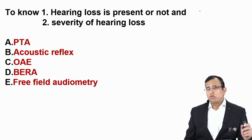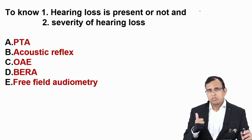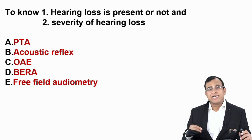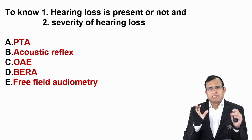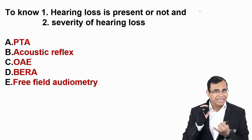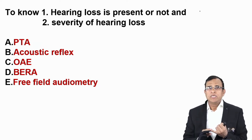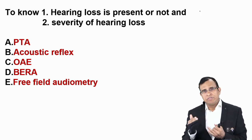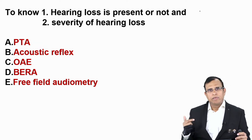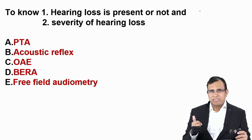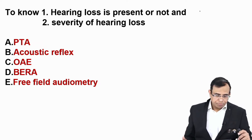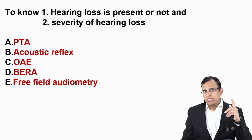To know the basic information — whether hearing loss is present and its severity — the investigations are: pure tone audiometry, acoustic reflex, OAE, BERA, and free-field audiometry. The most common test done for this basic information is pure tone audiometry, and that's why they ask many questions on it. It is a subjective investigation, simple, can be done in any clinic, not very costly, and gives all the information needed. In adults it is the first and sometimes the only test needed.